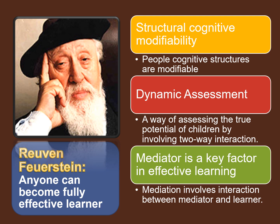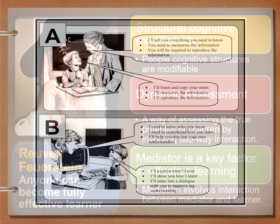The next psychologist is Reuven Feuerstein, who says that anyone can become a fully effective learner. He defines his theory as structural cognitive modifiability — that cognitive structures are modifiable. It is a dynamic assessment, a way of assessing the true potential of children through two-way interaction. The mediator is a key factor in effective learning. The methodology of the Feuerstein approach consists of four pillars: dynamic assessment, cognitive activation, mediated learning, and shaping modified behavior in an environment. Structural cognitive improvement can be demonstrated in positive change scores.